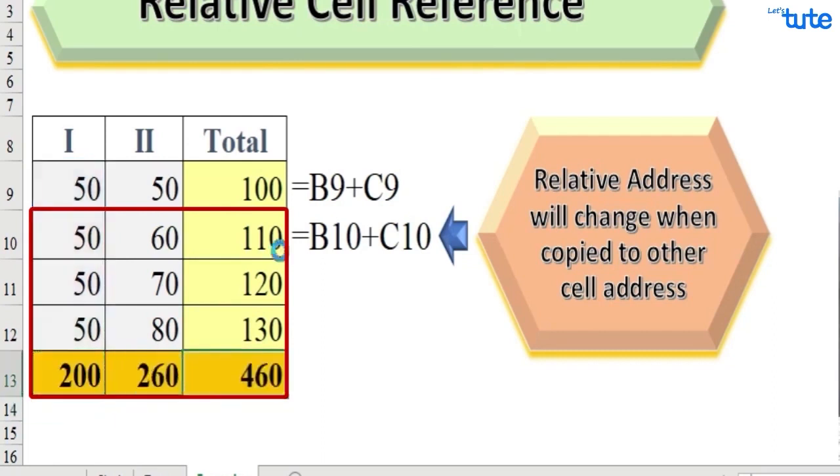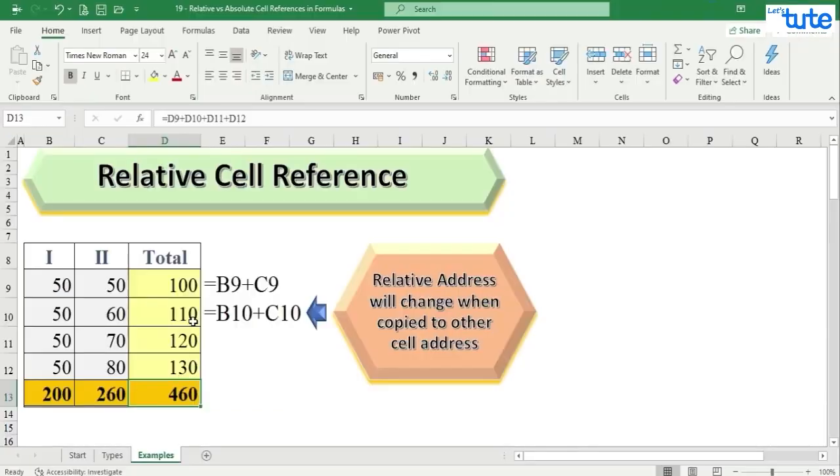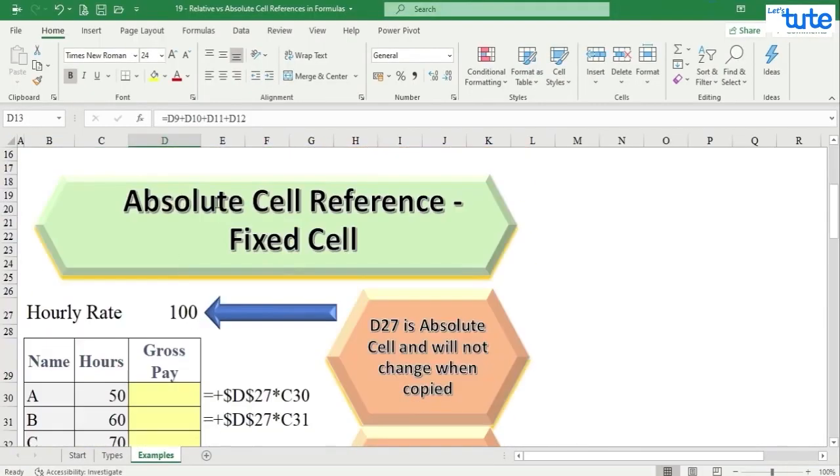So have you understood this perfectly? Basically, whenever we will copy the formula, the cell reference will change. Now if someone wants the cell reference to be fixed, then they can use the absolute cell reference.